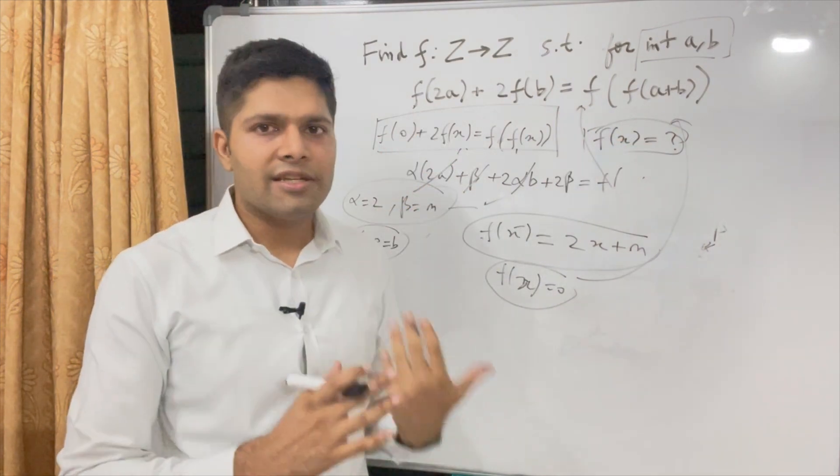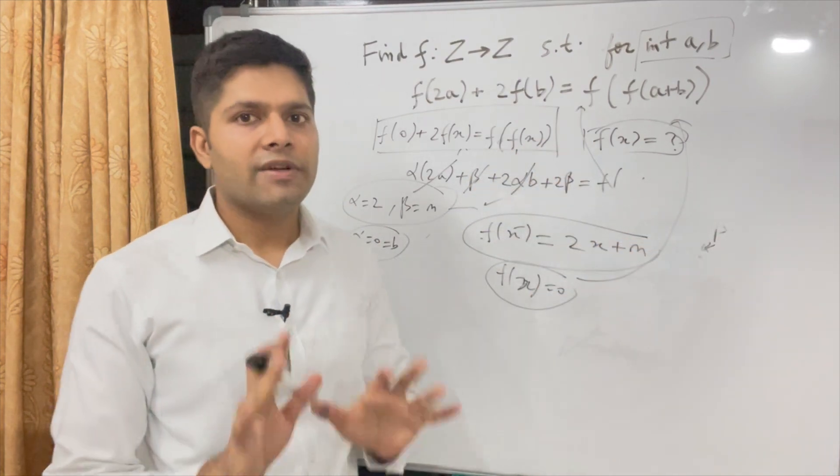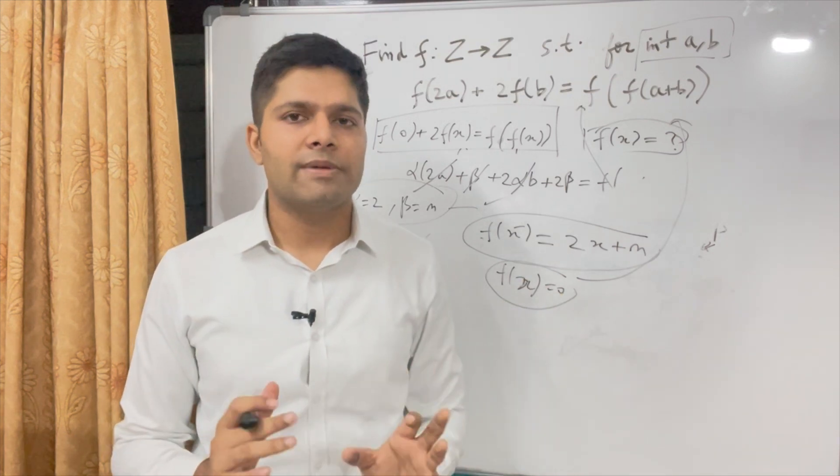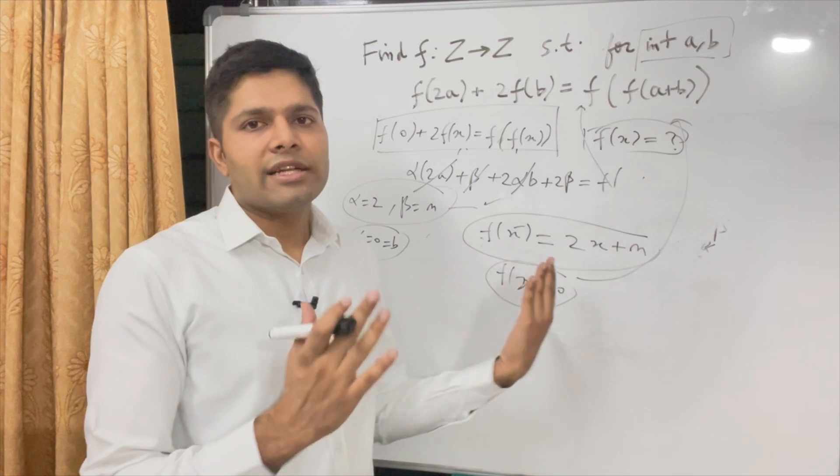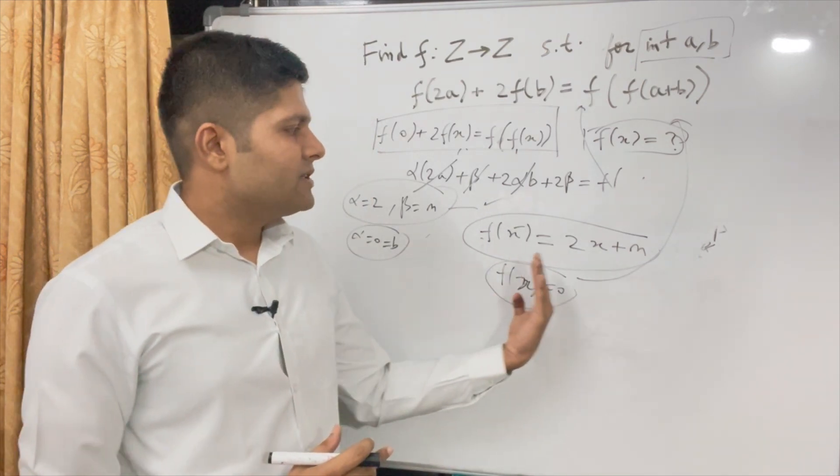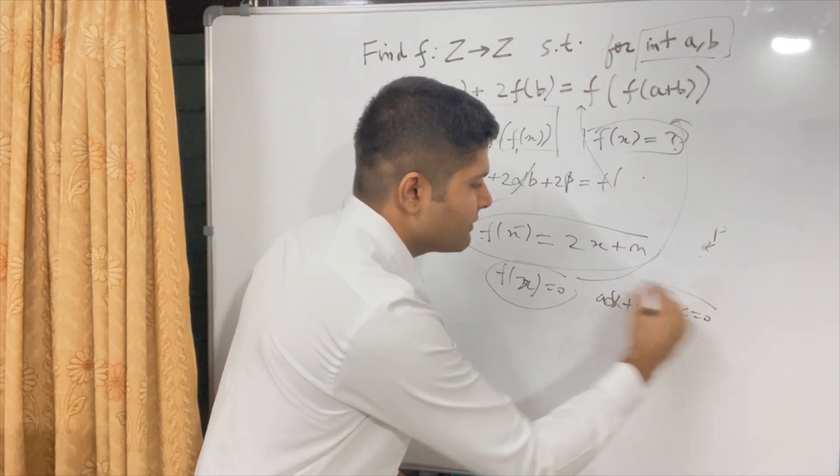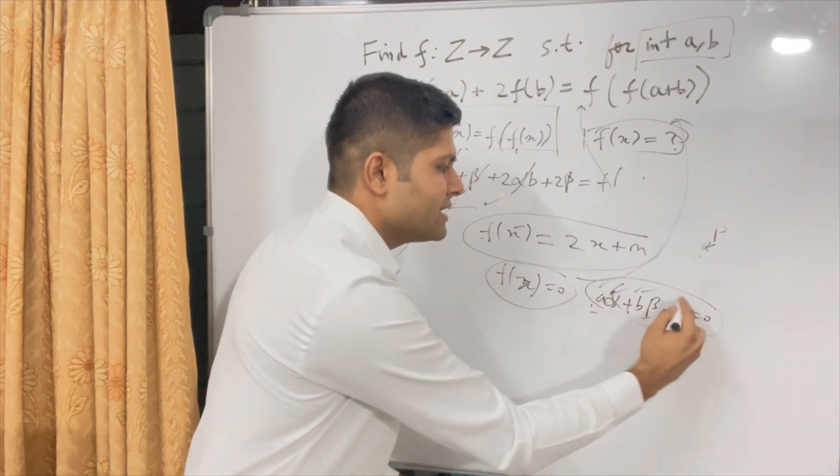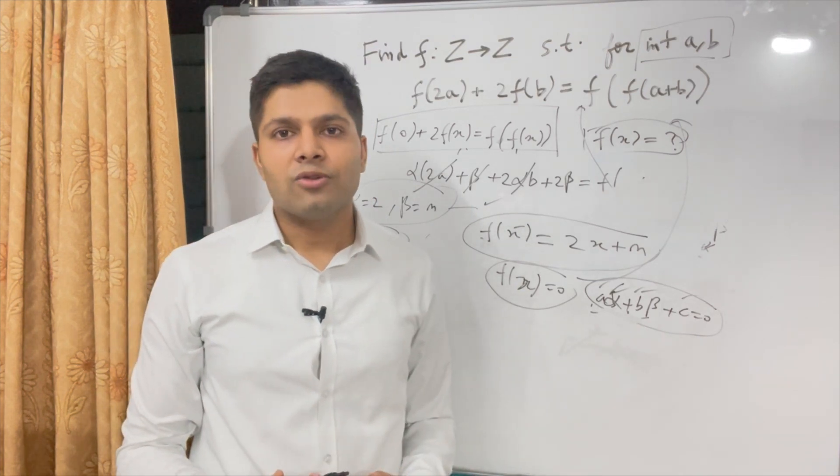So in functional equation, finding or plugging in 0 is a very standard operation. If you are given multiple variables, then putting one variable as x and other as 0 is often a good way. Now here we were asked for integers. So f(x+1) was how we found out f(x+1). And then we just compared. From that we were finding out that the function has to be linear function. And from there we just used another result that you know that a(α) + b(β) + c = 0. If this is satisfied for any value of a and b, any value of α and β, that means a, b and c all have to be 0. This is another result that we use, which is from linear algebra. I don't think it's something too complicated.